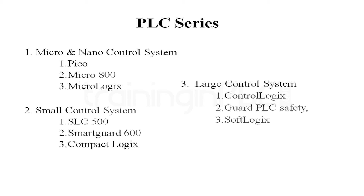The third one is the large control system, which is for very large scale industries. In this you can find Control Logic, Guard PLC Safety, and Soft Logic. The Guard PLC Safety is a specialized PLC for safety purposes, also called a safety PLC, and it comes under the large control system. Under Control Logic itself, you have many series such as 1756 Control Logic and 1756 Control Logic IO environment controller, among various other series.